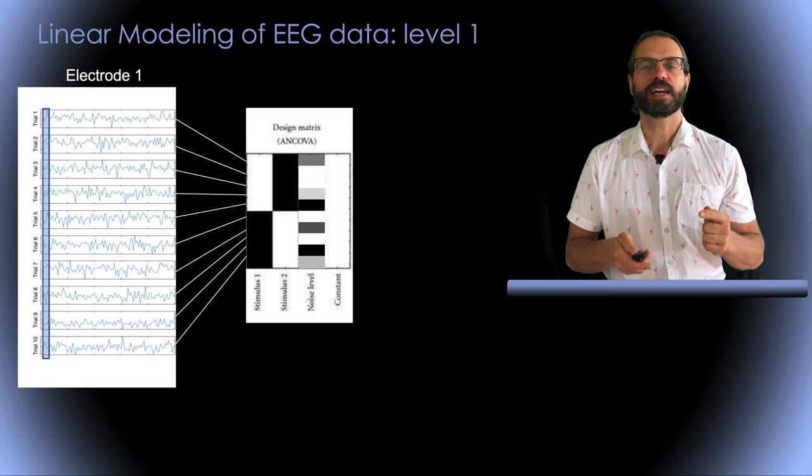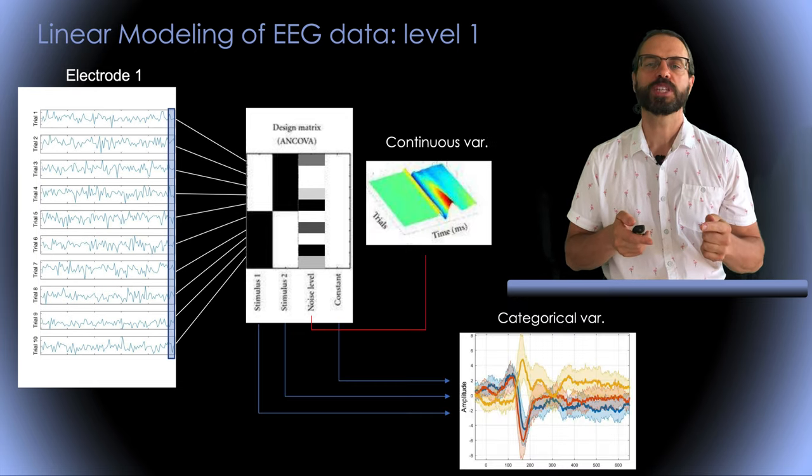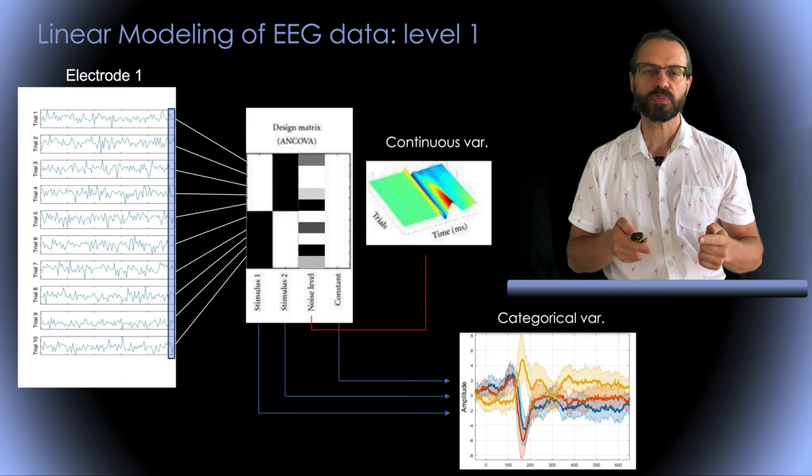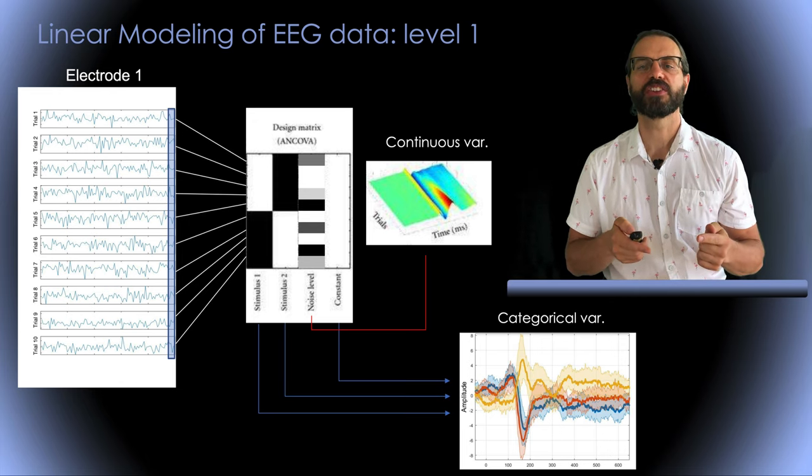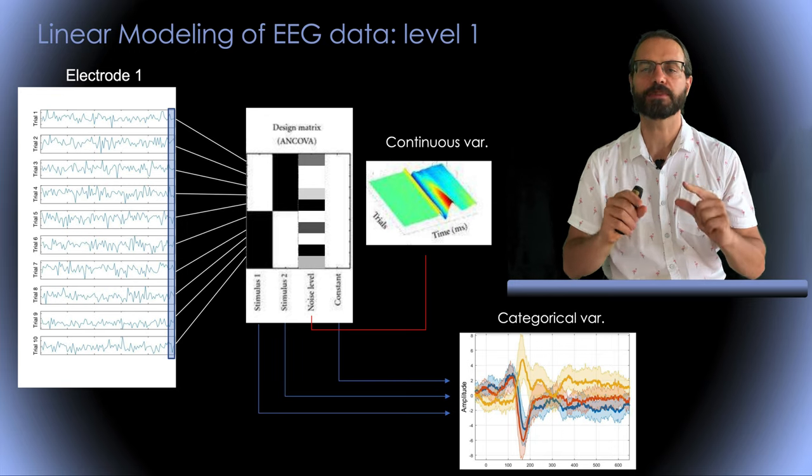So now we have beta 1, beta 2, etc. across time and we can build ERP-like diagrams out of them. So we can assess how the EEG data responds to the presentation of different types of stimuli.